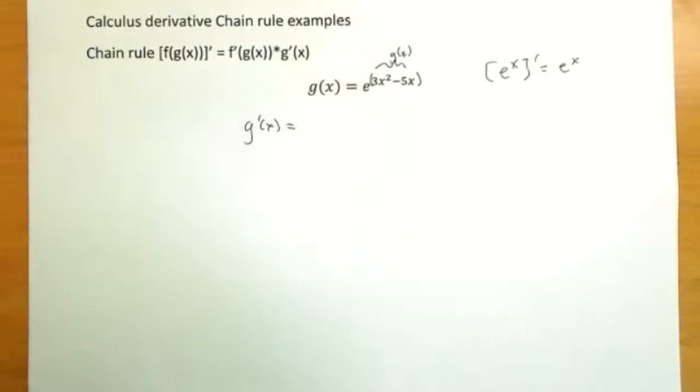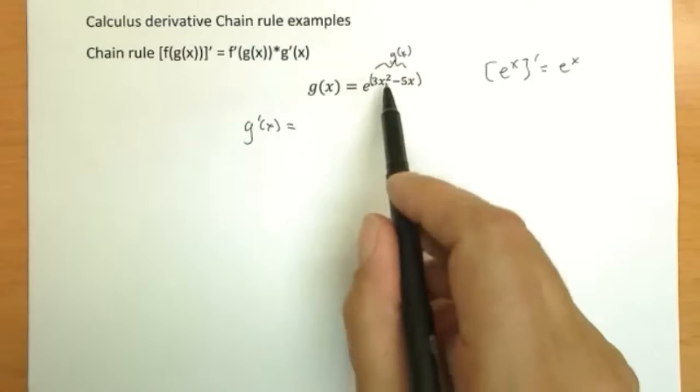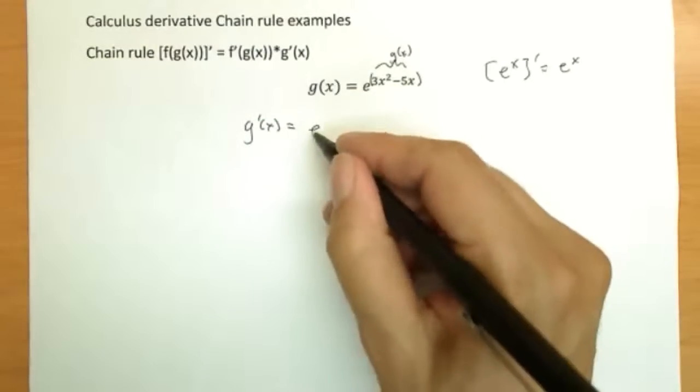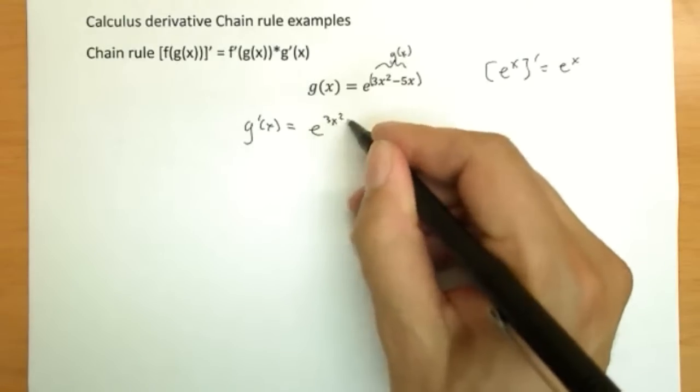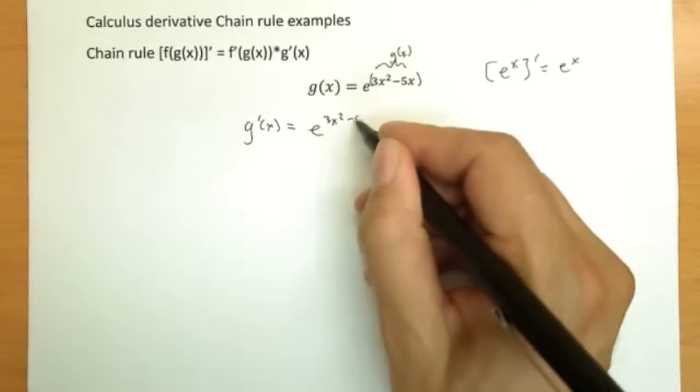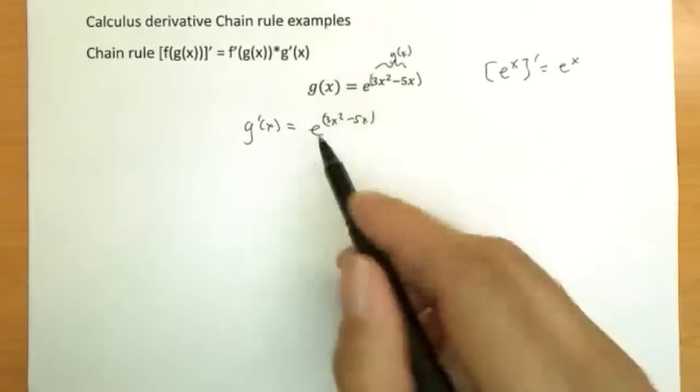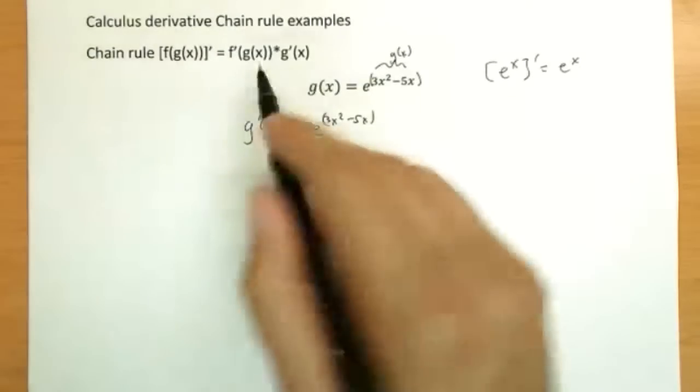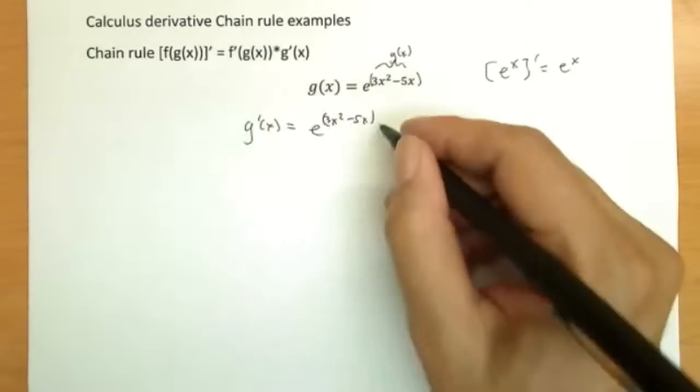E to the x's derivative is unchanged, and we don't change g of x either. So we're simply going to rewrite everything we have here: e to the 3x squared minus 5x unchanged. E to the x is its own derivative, and g of x is unchanged in this part, but we're not finished.